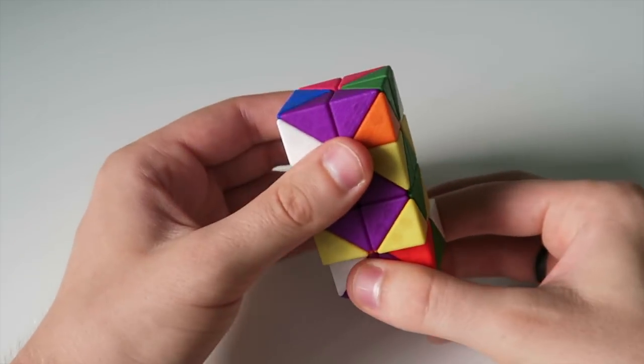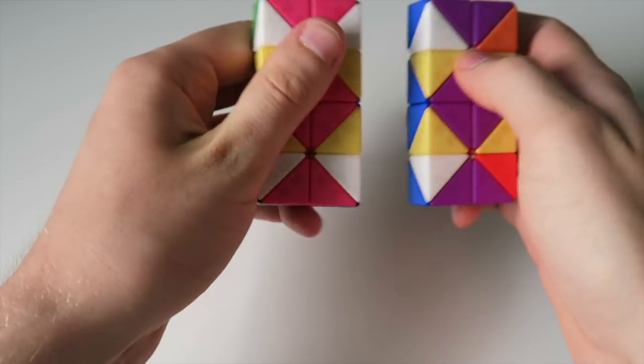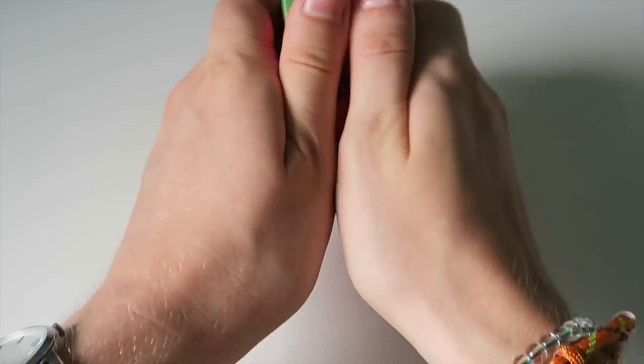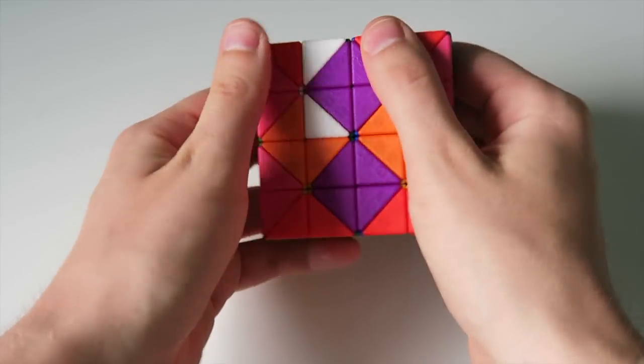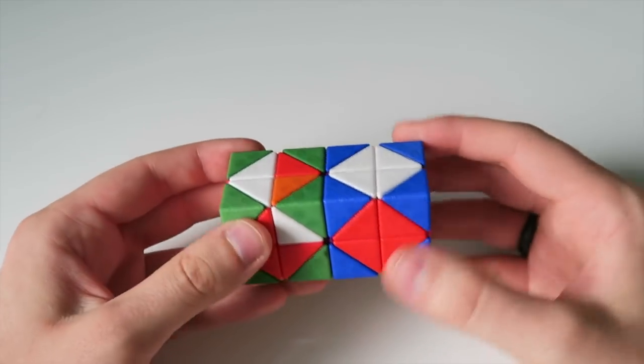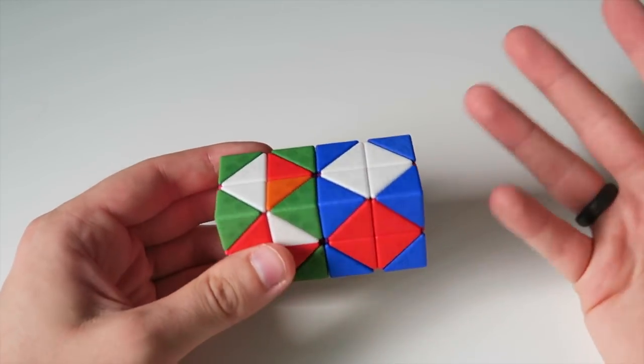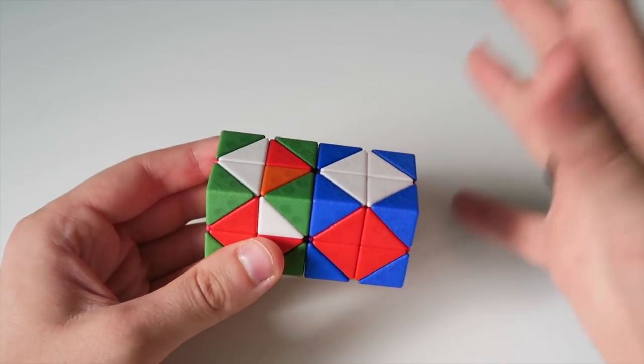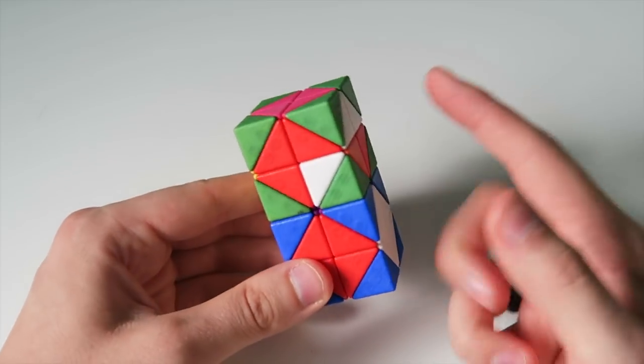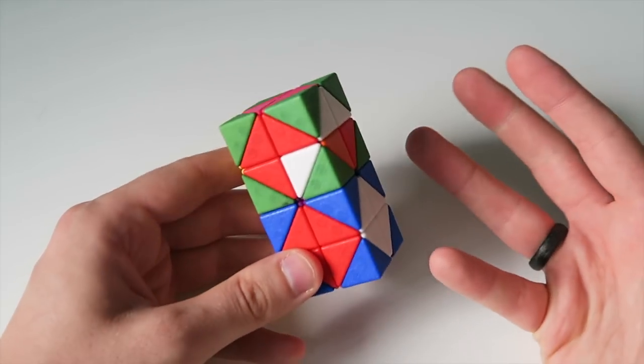If I do a gyro move and this gets our corners solved, so the gyro move in case you forgot reorients it so it takes these center pieces and puts them on the outside and I did green and blue just because they would be solved.